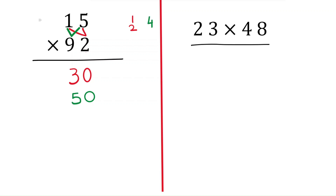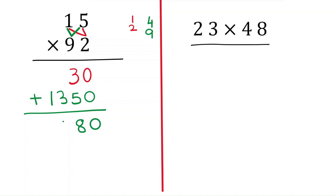Nine times one is nine; nine plus four is thirteen. Now add both partial products: zero, three, three plus five is eight, and three and one — 1380 is the answer.